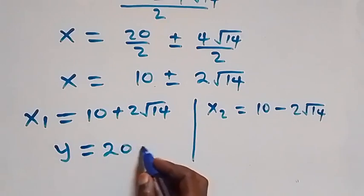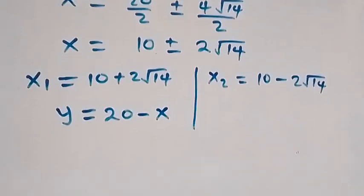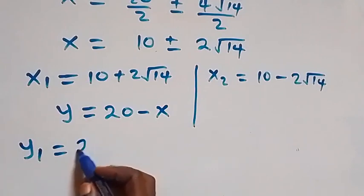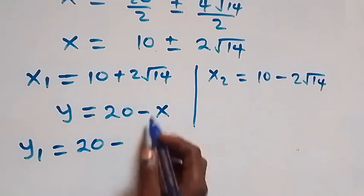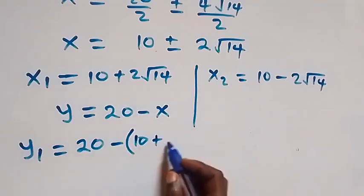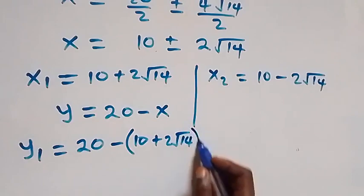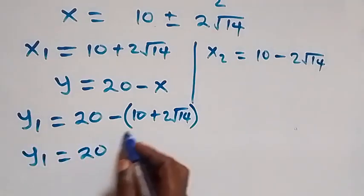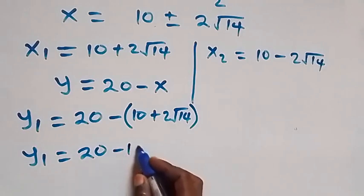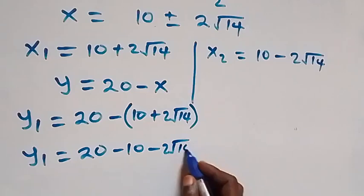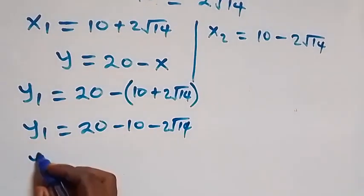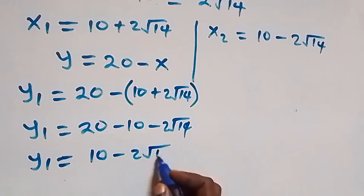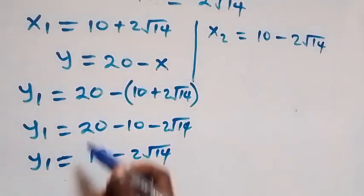We can also get the corresponding values of y from the relation y equals to 20 minus x, derived from equation one. So y1 equals to 20 minus x1, which is 20 minus bracket 10 plus 2 root 14. Opening the bracket gives y1 equals to 20 minus 10 minus 2 root 14, which is 10 minus 2 root 14.